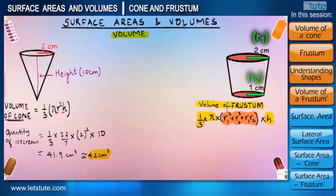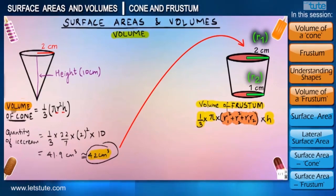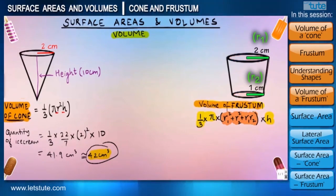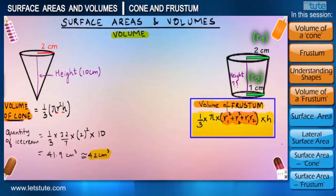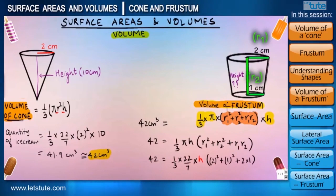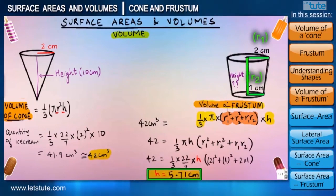Now suppose the company wishes to sell the same quantity of ice cream in the cup also as they sold it in a cone, which means they want the volumes of cone and cup to be same. Then what exactly should be the height of the cup in order to contain 42 centimeter cube of ice cream which we just calculated for the cone? Now that we know the volume of cup or frustum, so let us equate it with the volume of cone and try to find the height of the cup. By doing so, the height will come out to be 5.71 centimeters.